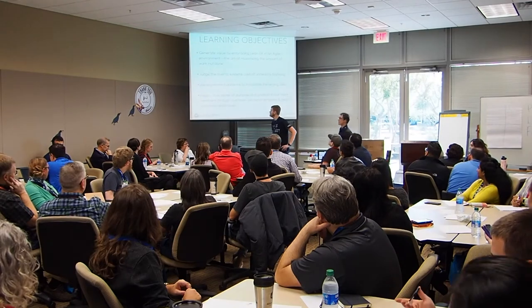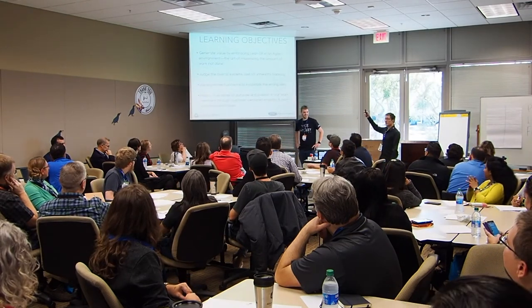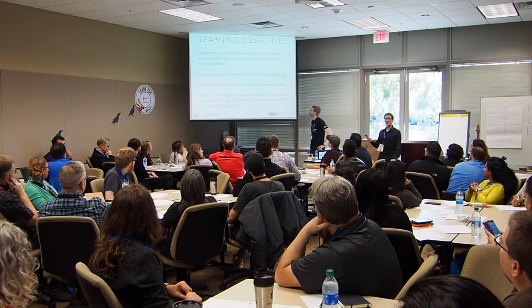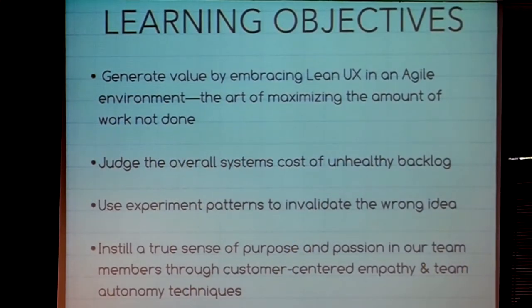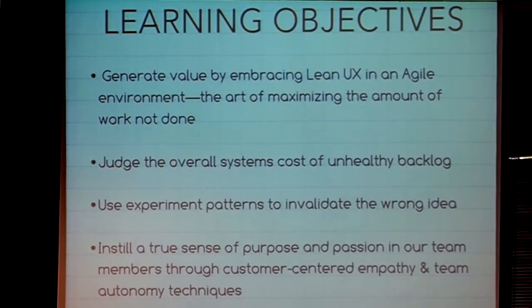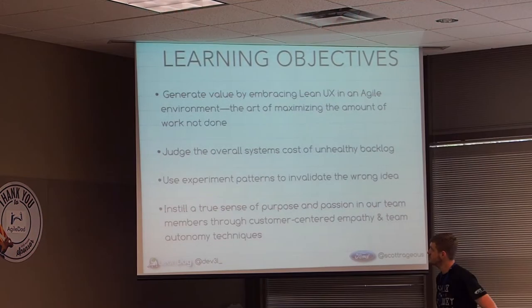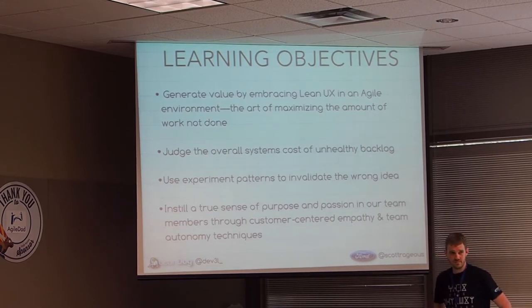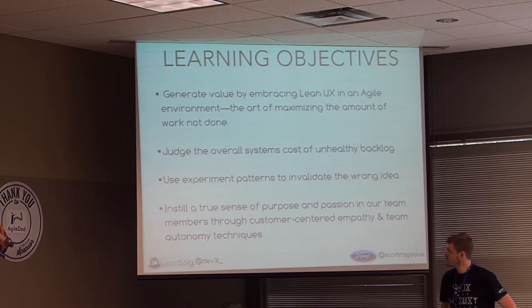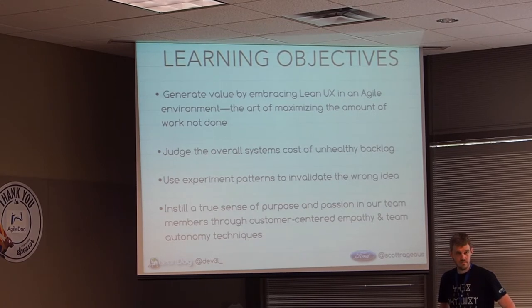These are our actual learning objectives. If none of these look like they fit what you're looking for in this session, there's always hallway conversations. We're going to learn how to generate value by embracing Lean UX. Optimize the amount of work that isn't necessary to do — that's the real way to get twice the work in half the time. Judge what a healthy backlog looks like. We'll look at experiment patterns and transition from validating ideas to actually invalidating them, because otherwise there's a lot of confirmation bias.